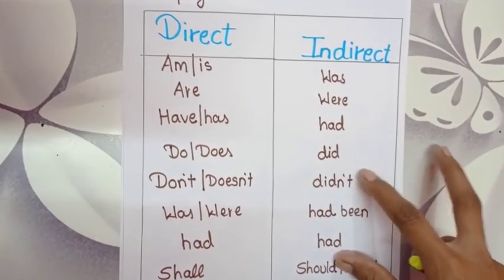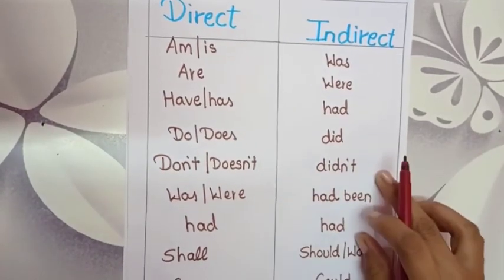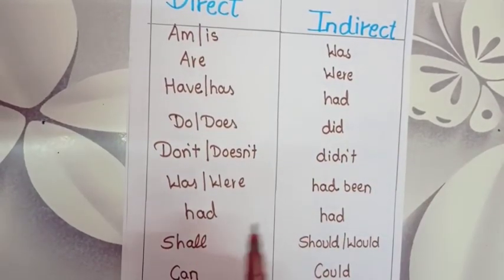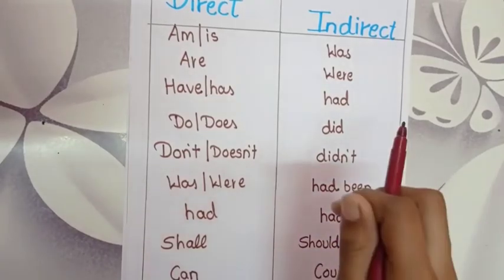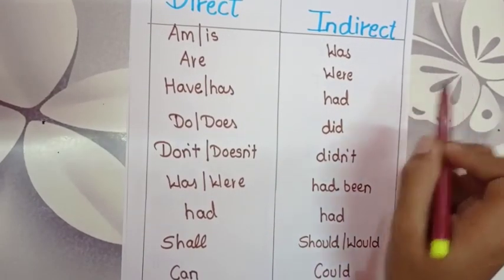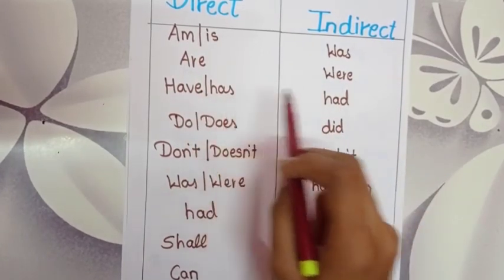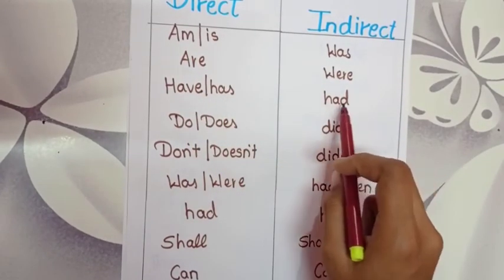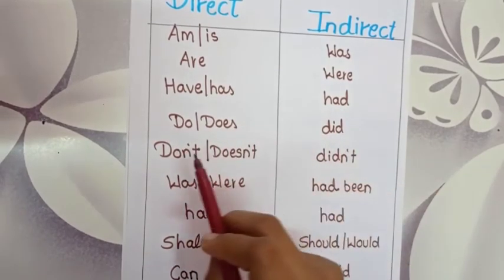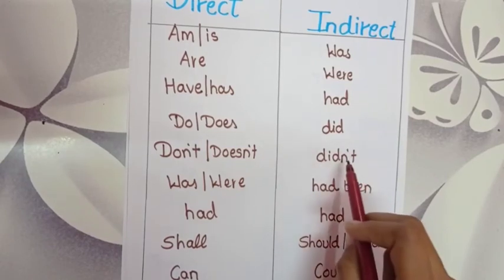In the helping verbs chart — direct and indirect — if the sentence consists of 'am' or 'is', it should be converted to 'was' in the indirect sentence. 'Are' should be converted to 'were'. 'Have' or 'has' should be converted to 'had'. 'Do' or 'does' should be converted to 'did'. 'Don't' or 'doesn't' should be converted to 'didn't'.